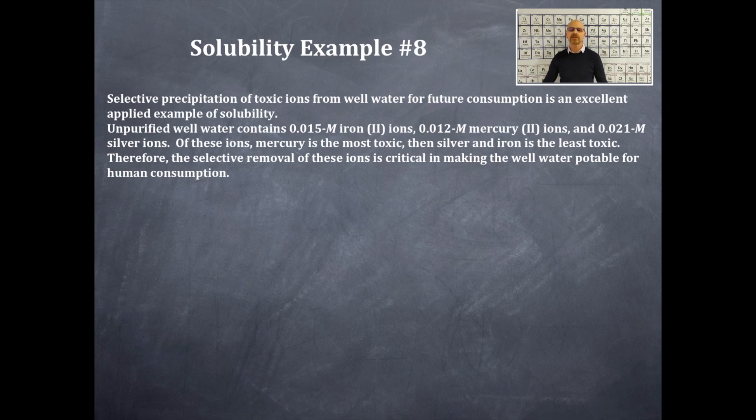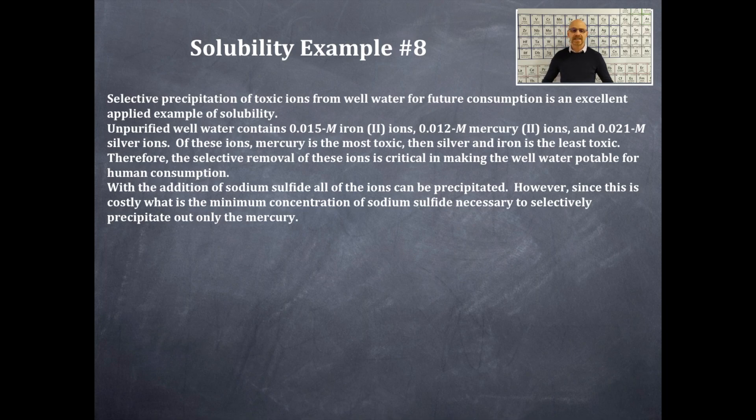Therefore, selective removal, that is, precipitation, of these ions is critical in making the well water potable for human consumption. With the addition of sodium sulfide, all of these ions can be precipitated. However, since this is costly, what is the minimum concentration of sodium sulfide necessary to selectively precipitate out only the mercury?